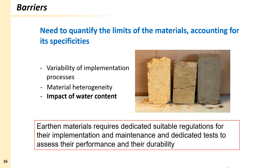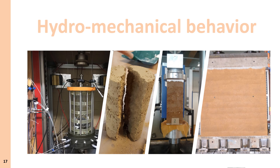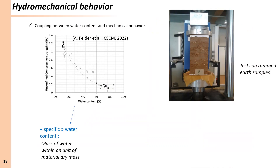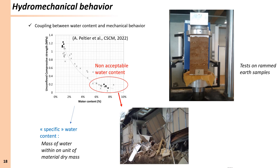One main difference between earthen materials and other construction materials is that earthen material behavior strongly depends on its water content — this is the focus of the second part of the presentation. To illustrate this, an experimental campaign at ENTPE on numerous rammed earth samples at several water contents shows a drop in strength as water content increases. This is why earthen walls subjected to high water content can collapse. This is well known in geotechnical engineering: the load-bearing capacity of soil decreases with water content, and this is taken into account in most elastoplastic models for unsaturated soils, for example with the loading-collapse curve.